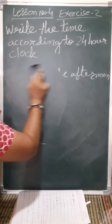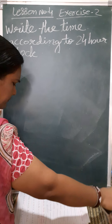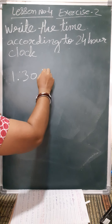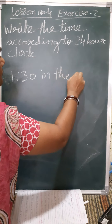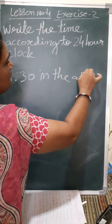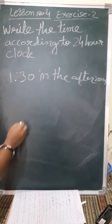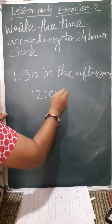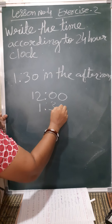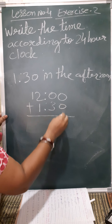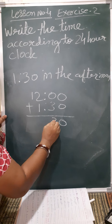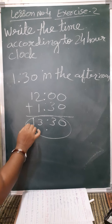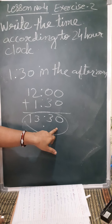Same like this — another example. In the afternoon at 1:30. We add 12: 1 plus 12 equals 13. So it is read as 13:30 in 24-hour clock. Now understood?